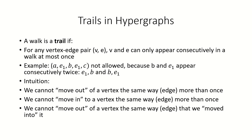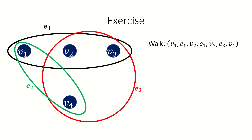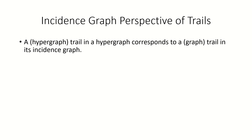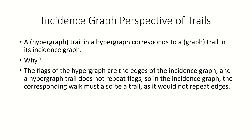As an exercise, consider a walk in a hypergraph — it's not a trail because we moved into v_2 using e_1 and then moved out of v_2 using e_1, which is not allowed. If we think about hypergraph trails from an incidence graph perspective, a trail in a hypergraph turns out to be a trail in the incidence graph too. This is because every flag in the hypergraph is an edge in the incidence graph, and our definition of trail is a walk that doesn't repeat flags — so in the incidence graph, our trail is a walk that does not repeat edges, or in other words, a graph trail.